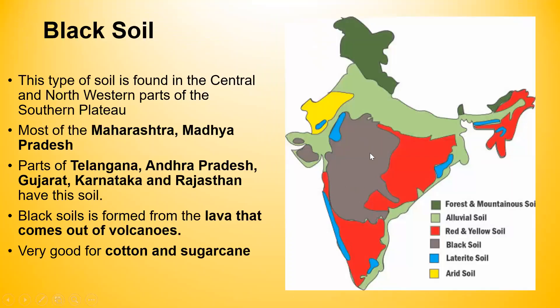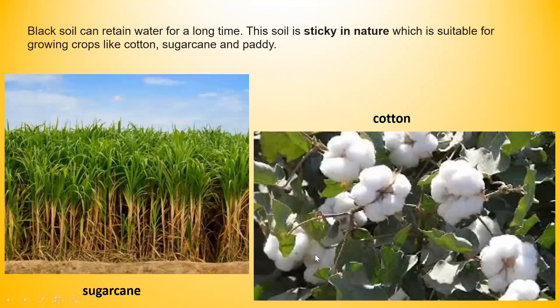Black soil is essentially black in color. This type of soil is found in the central and north-western parts of the Southern Plateau — most of Maharashtra, Madhya Pradesh, parts of Telangana, Andhra Pradesh, Gujarat, Karnataka and Rajasthan. Black soil is formed from the lava that comes out of volcanoes. It is very good for cotton and sugarcane. Black soil can retain water for a long time and is sticky in nature, making it suitable for growing cotton, sugarcane and paddy.